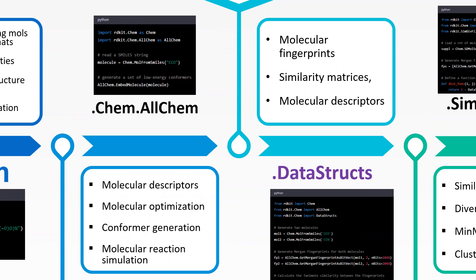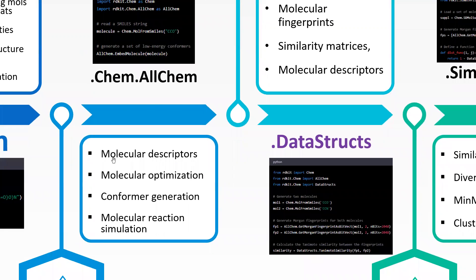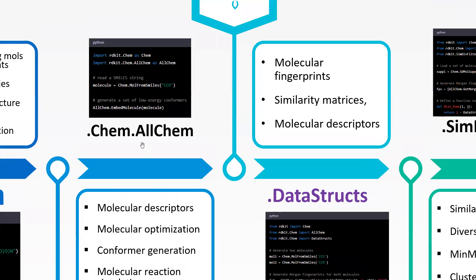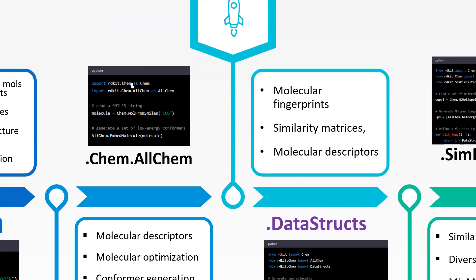The next library provides additional functionality to rdkit.Chem — this is AllChem. It provides additional functionalities like molecular mechanics and quantum mechanics calculations, including force field optimization, molecular dynamics simulations, quantum calculations, molecular descriptors, molecular optimization, conformation generation, and molecular reaction simulations. To access it, import rdkit.Chem then from rdkit.Chem import AllChem. In the example shown, we generate a low-energy conformation using the AllChem library.